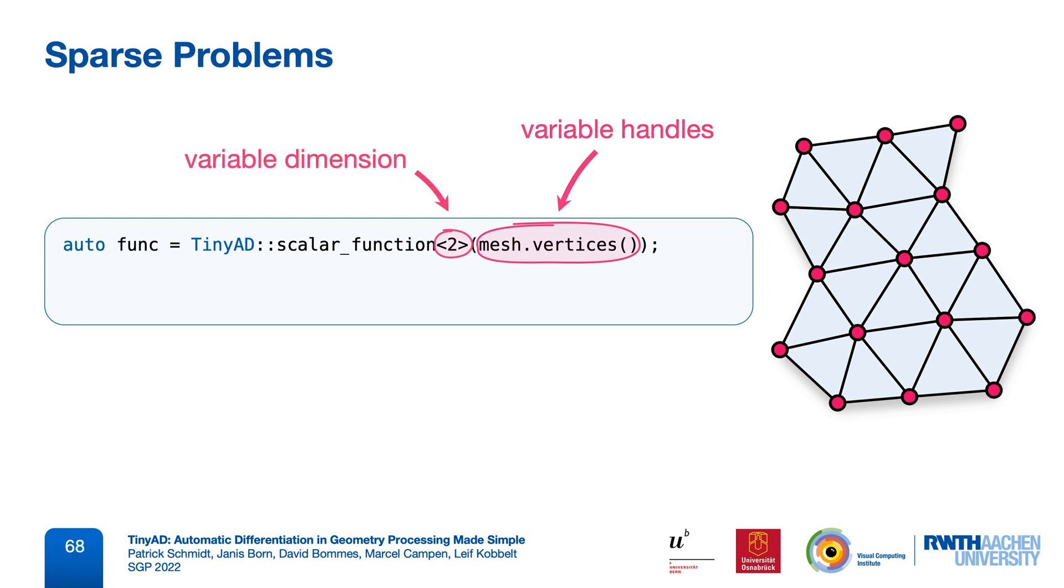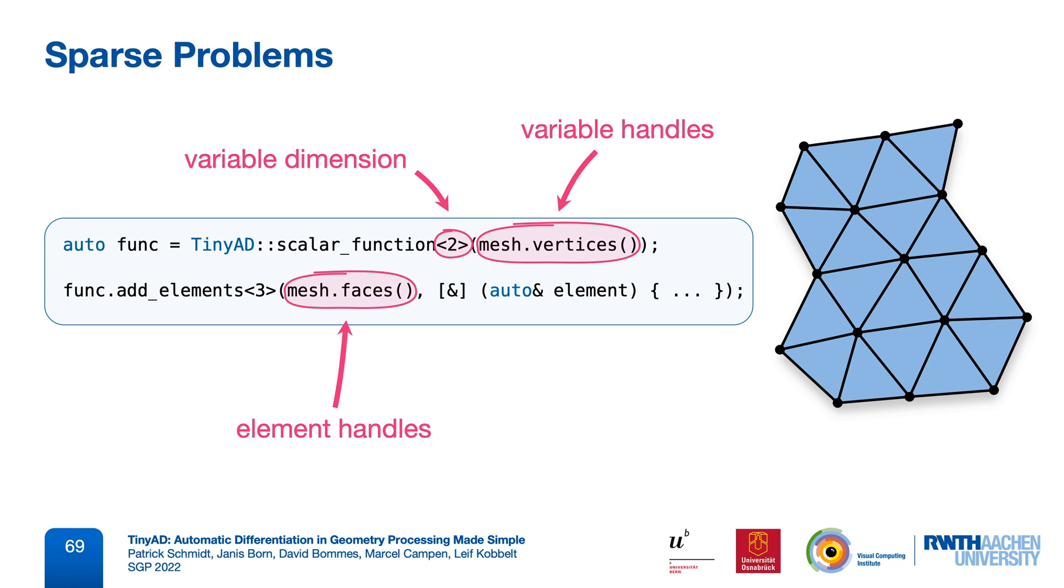Similarly, we add a list of element handles to sum over, and specify that each of these elements depends on three vertices. So, we will be differentiating six dimensional subproblems. Three vertices per triangle times two variables per vertex. We can then specify a lambda function to be evaluated for each triangle.